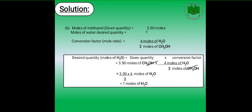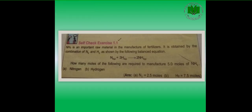That is all about Conversion Factor for today. Here is Self Check 1.1. Ammonia is an important raw material in the manufacture of fertilizers. It is obtained by the combination of nitrogen and hydrogen as shown by the following balanced chemical equation: 1 mole of nitrogen gas reacts with 3 moles of hydrogen to produce 2 moles of ammonia. You are asked: how many moles of nitrogen and hydrogen are required to manufacture 5 moles of ammonia? Kindly follow the example solved above and update me with your feedback.